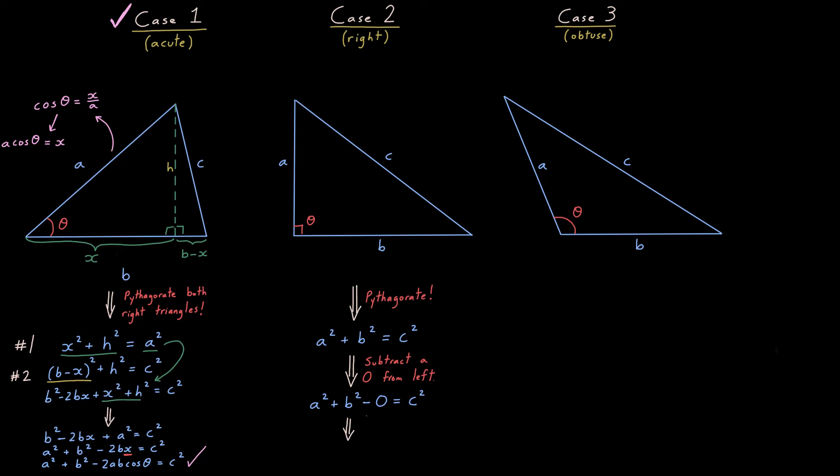Subtracting or adding 0 doesn't change a thing, but now rewrite that 0 in a very clever way. Note that cosine of 90 is 0, which means that anything times cosine of 90, say 2ab, must also be 0. So 0 is the same thing as that underlined guy in yellow. Throw him in and you have proven case two, in one fell swoop.